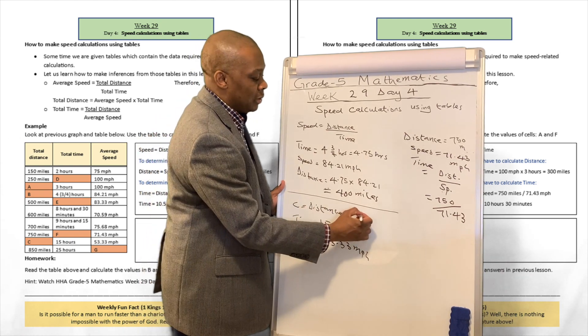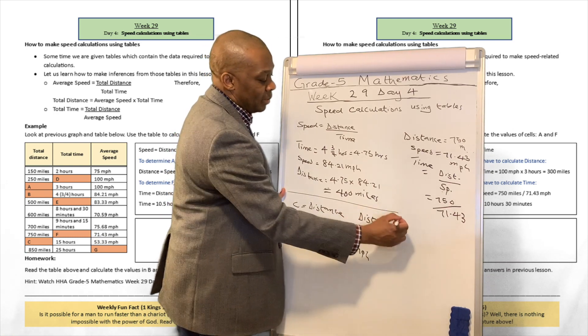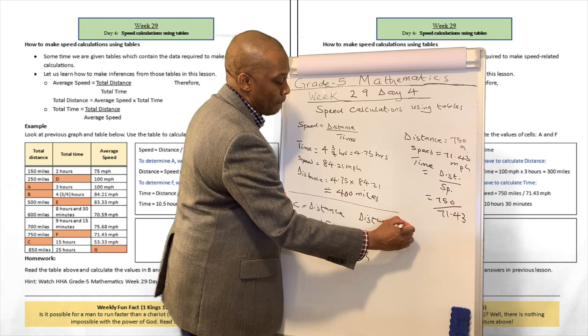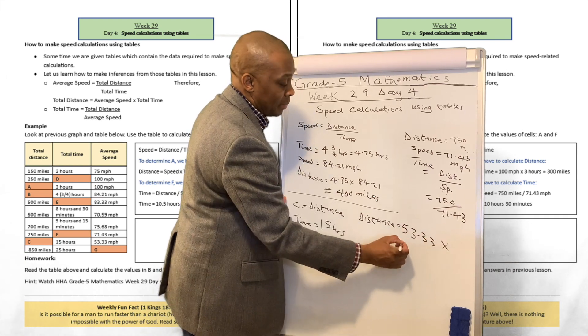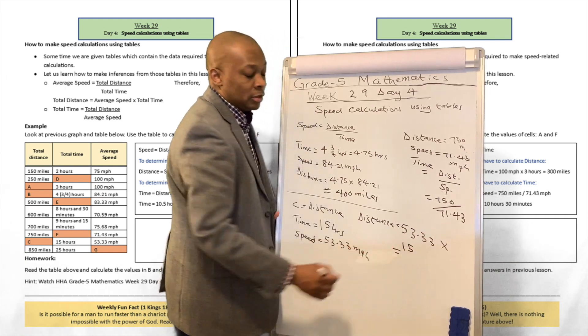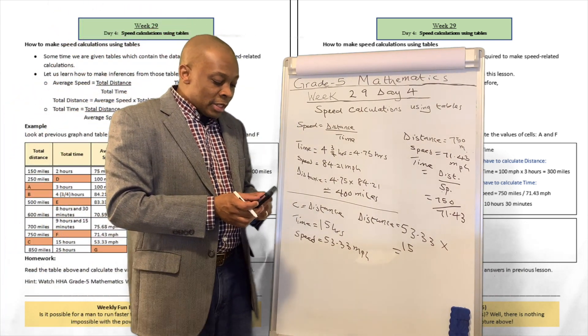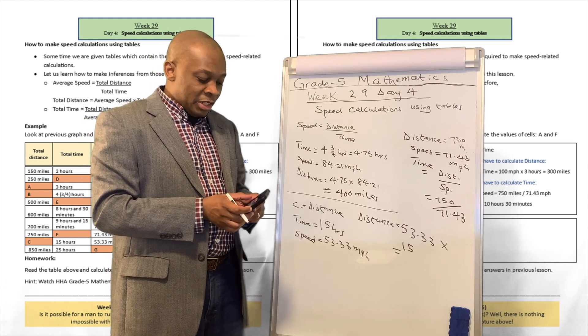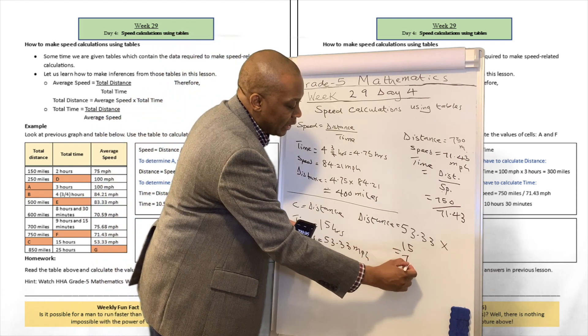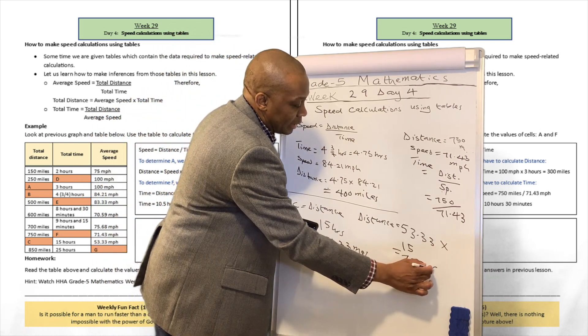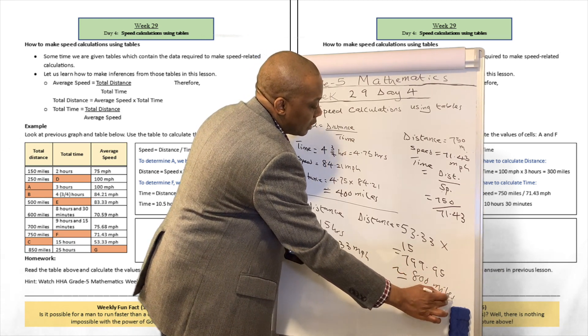Now, what is the distance? Now, we know the distance is going to be equivalent to speed multiplied by time. So that is going to be 53.33 multiplied by 15 hours. You're welcome to use your calculator to do that. All right. So that's going to be 53.33 multiplied by 15 hours. That's going to be equivalent to 799.95, approximately 800 miles.